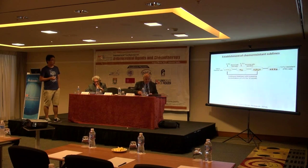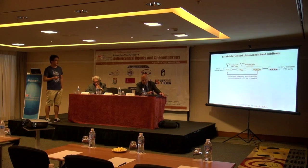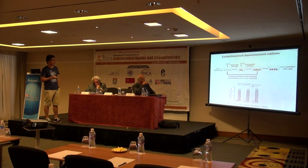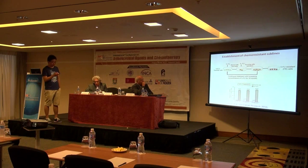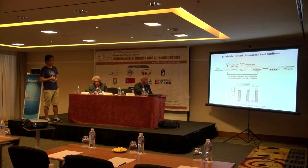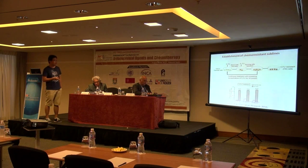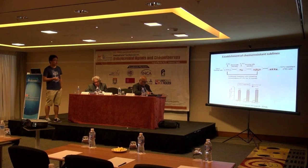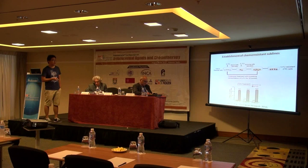In our first study, we treated esophageal cancer cells with increasing concentrations of 5-FU, the most commonly used drug in chemotherapy. After treatment with 5-FU, most cells died, but some survivors remained. After about one and a half years, we obtained a sub-line named 5-FU-resistant cells, or FR cells. These cells are highly resistant to 5-FU treatment.